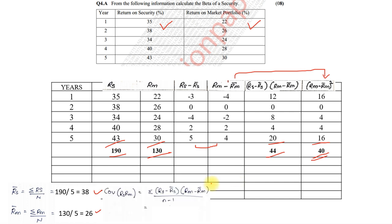Once we get these two totals, the next thing that we need to find is covariance. With the second last column ka total divided by n minus 1. So, 5 minus 1 is 4. 44 divided by 4 is 11. Next, standard deviation square M is last column upon n minus 1. So, 40 divided by 4 which comes to 10. Last step, beta is equal to 11 divided by 10 which comes to 1.1.